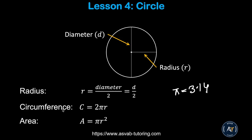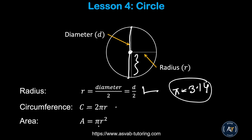Now we'll learn how to find the area and circumference of a circle. The distance from one side to another through the center is called the diameter, and half of the diameter is called the radius. The radius equals diameter divided by 2, the circumference equals 2 times pi times radius, and the area equals pi times radius squared, where pi equals 3.14.